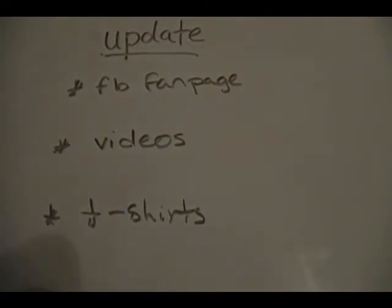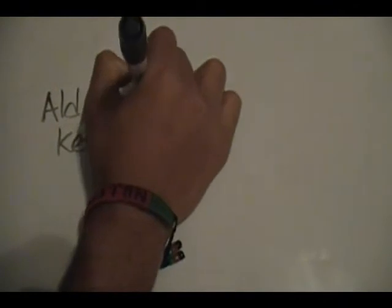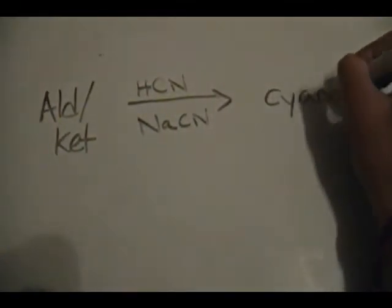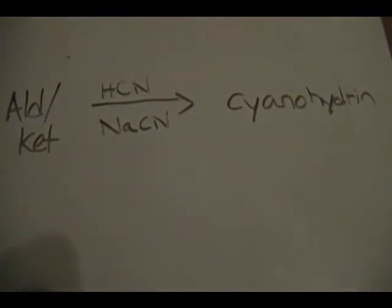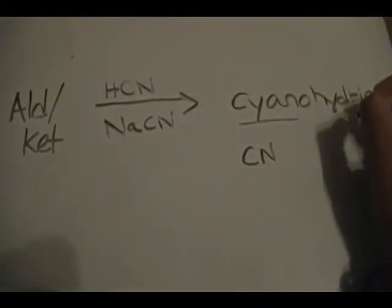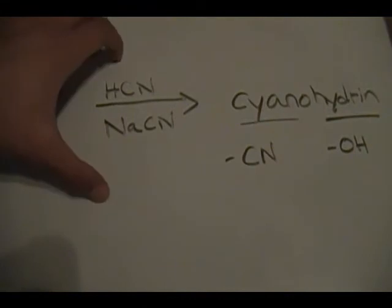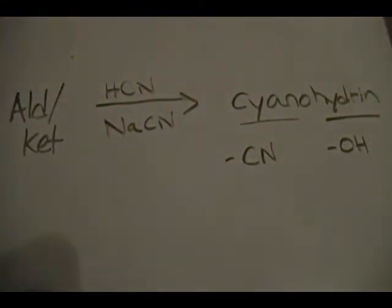Okay, that's the quick update. Let's move on to the topic for this video: cyanohydrin formation. The typical reaction is an aldehyde or ketone reacting with HCN. You get your cyanohydrin. The name itself tells you exactly what's in the product — the 'cyano' part tells you there's a CN group, and the 'hydrin' part tells you there's an OH group.